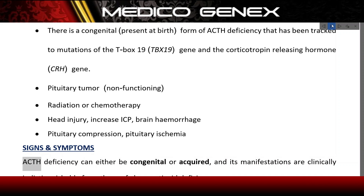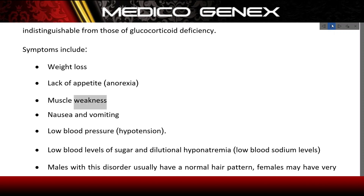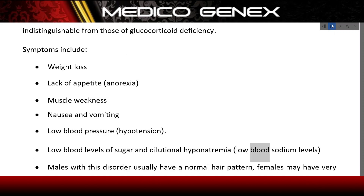ACTH deficiency can be either congenital or acquired, and its manifestations are clinically indistinct from those of glucocorticoid deficiency. Symptoms include weight loss, lack of appetite, anorexia, muscle weakness, nausea and vomiting, low blood pressure (hypotension), low blood sugar, and dilutional hyponatremia (low blood sodium levels).